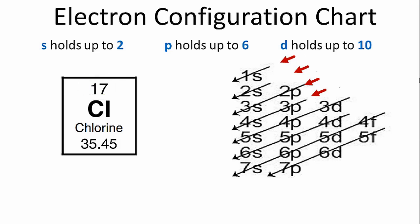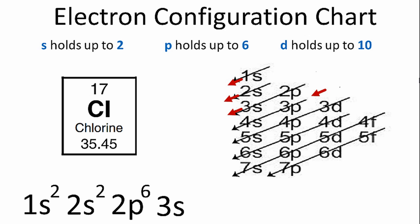So we'll go down. We have the 1s, and that holds two. We then have the 2s, that holds two, since it's an s orbital. And then we'll go down 2p, which holds up to six. And we'll put six in there. If you add those numbers up, we've used 10 electrons so far. We have 17. And after the 2p in that row, we have 3s, which holds two. We've used 12 electrons now.